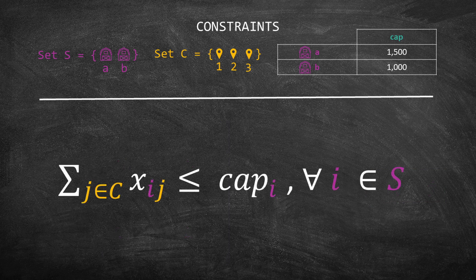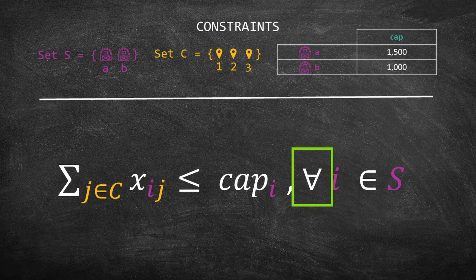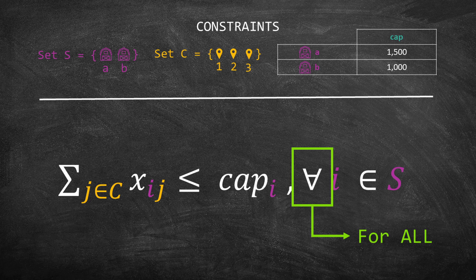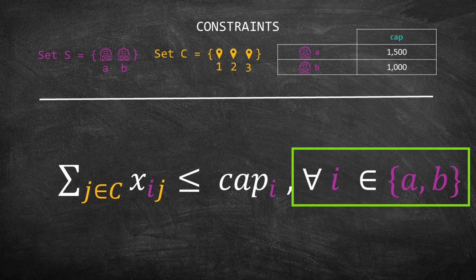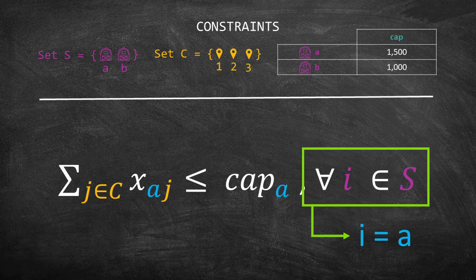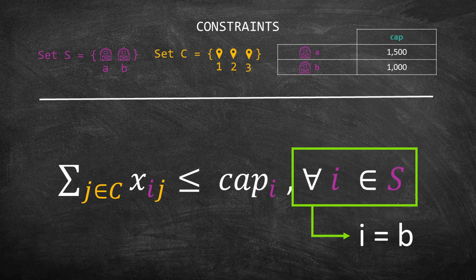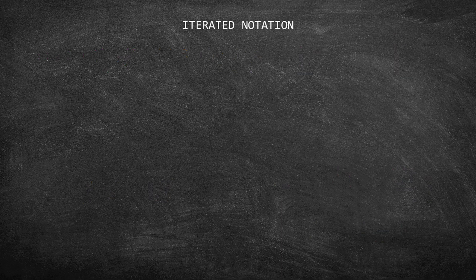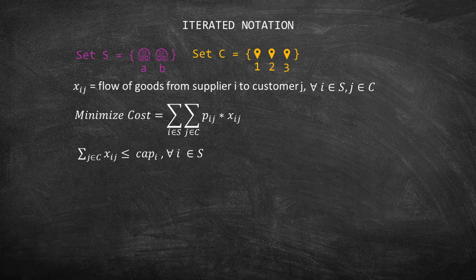To do that, we need to replace the indexes A and B for index I. We also need to say that this constraint is valid for each I in the set of suppliers. One quick tip. Do you see the symbol of a reversed letter A? It means for all. This is helpful to indicate the number of constraints you are going to have. In this case, we have I in set S. Since we have two elements in set S, we are going to have two constraints, one when I equals A and another when I equals B. Let's add this compact form to the formulation.